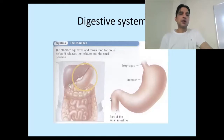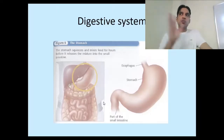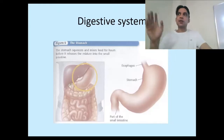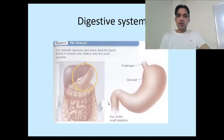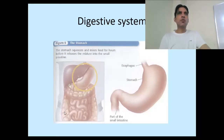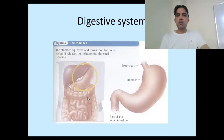The food now enters the next part: the small intestine. There are two types of intestines — the small intestine and the large intestine. The small intestine starts right after the stomach and is very long with many folds.